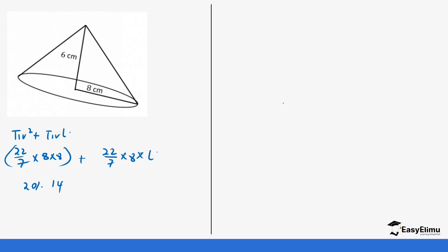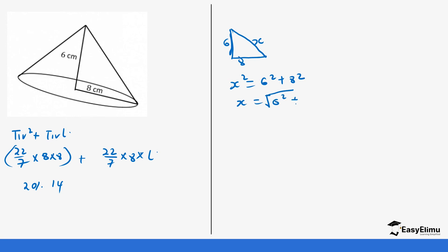In this case we are not given the slant height l directly, but we have been given the height and the base radius, so we can find the slant height as the hypotenuse of a right triangle. With height 6 and radius 8, we need to find x: x² = 6² + 8², so x = √(6² + 8²) = √(36 + 64) = √100.